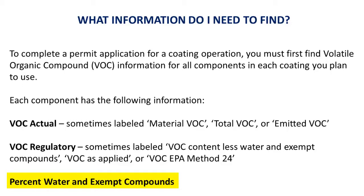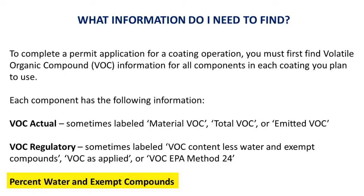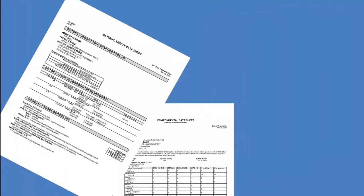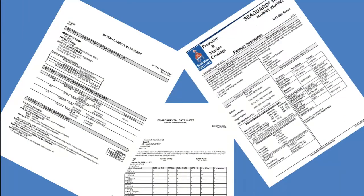You will need to have at least two of the above three pieces of information for each component used in the coating operation. The manufacturer of your coatings will usually have a variety of sources to find VOC information.